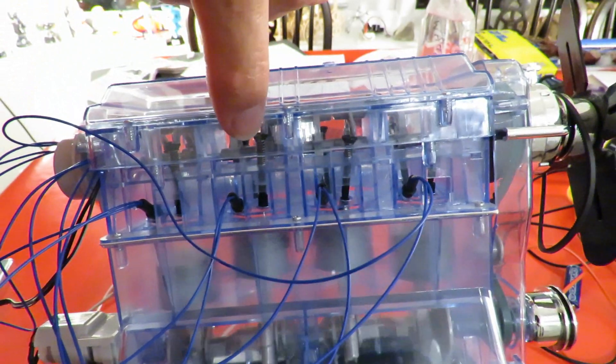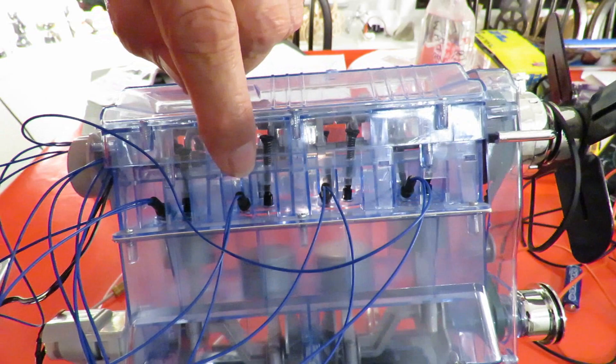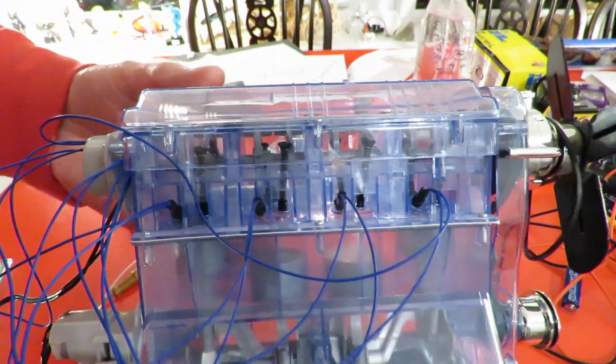So the valve on this side must be the exhaust, and the valve on the other side must be the inlet. Yeah, that makes sense.